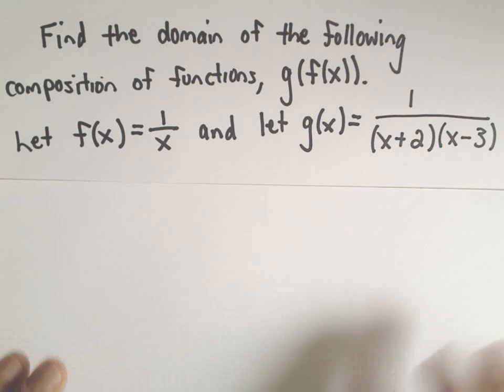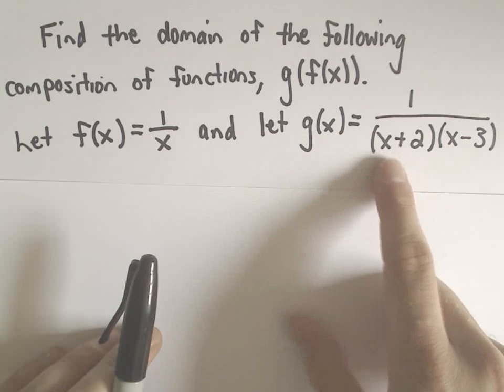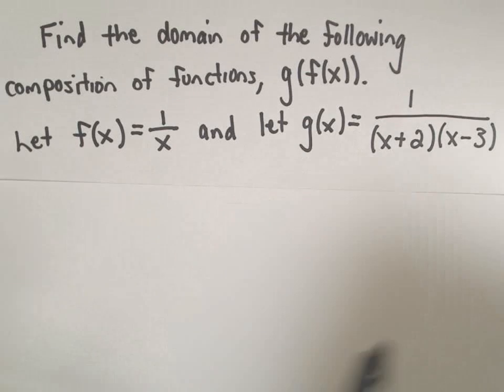So I've made an example here. f of x is going to be 1 over x. g of x is going to be 1 over x plus 2 times x minus 3. And we're going to find the composition of g of f of x.